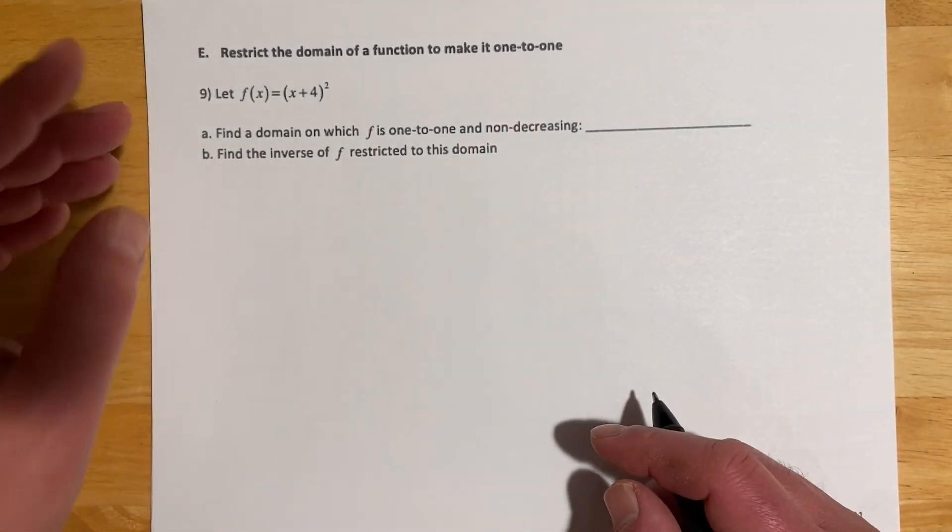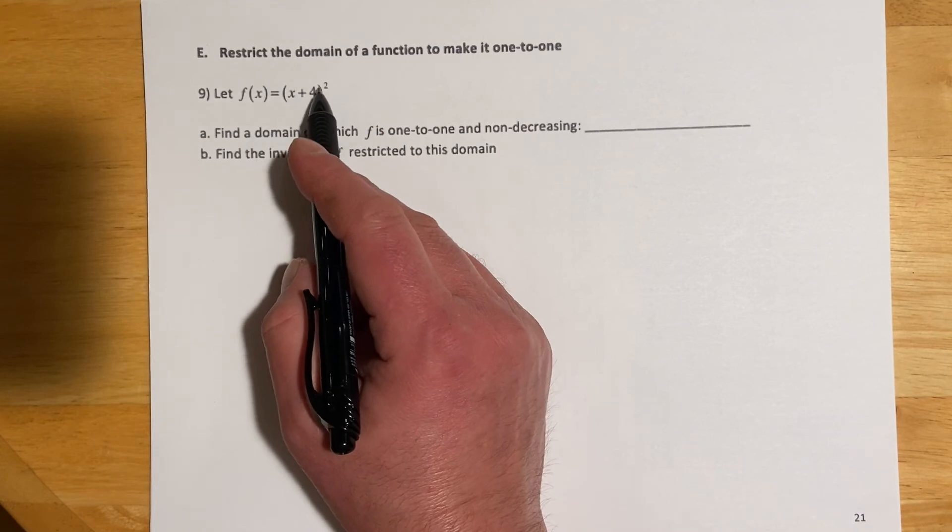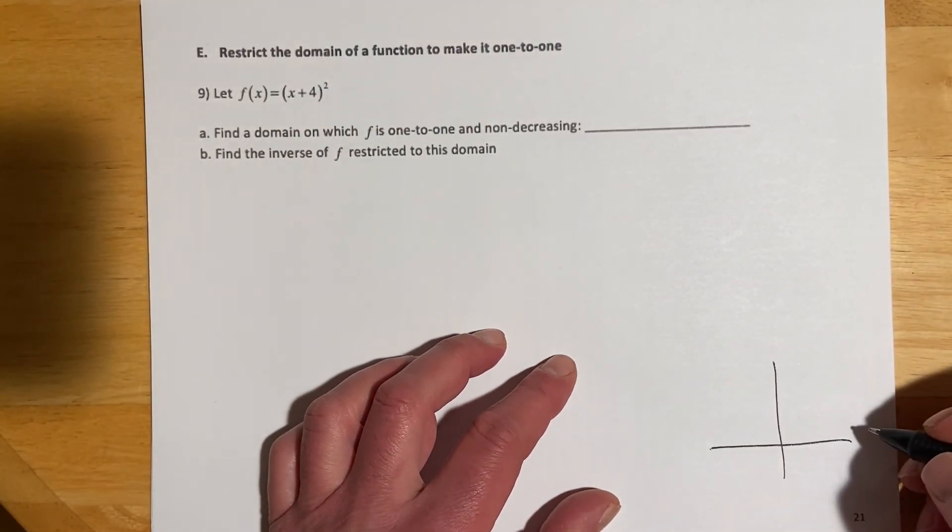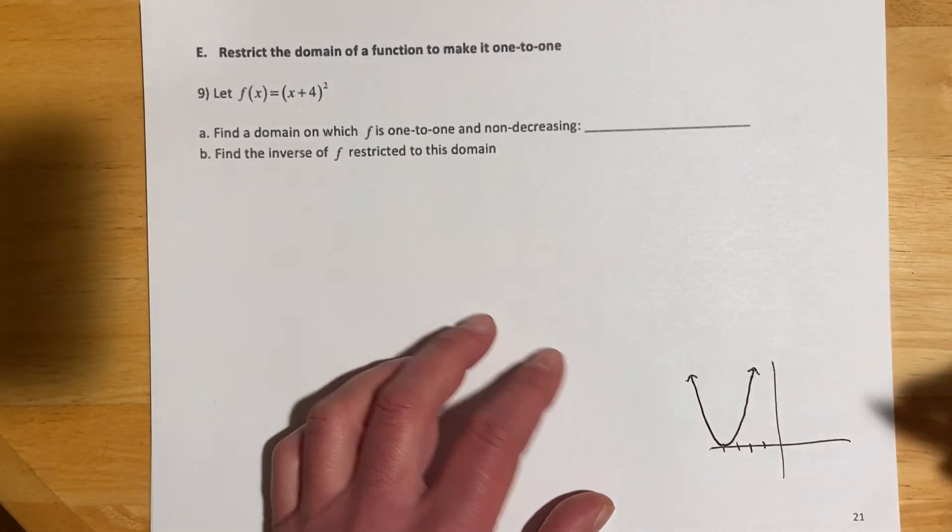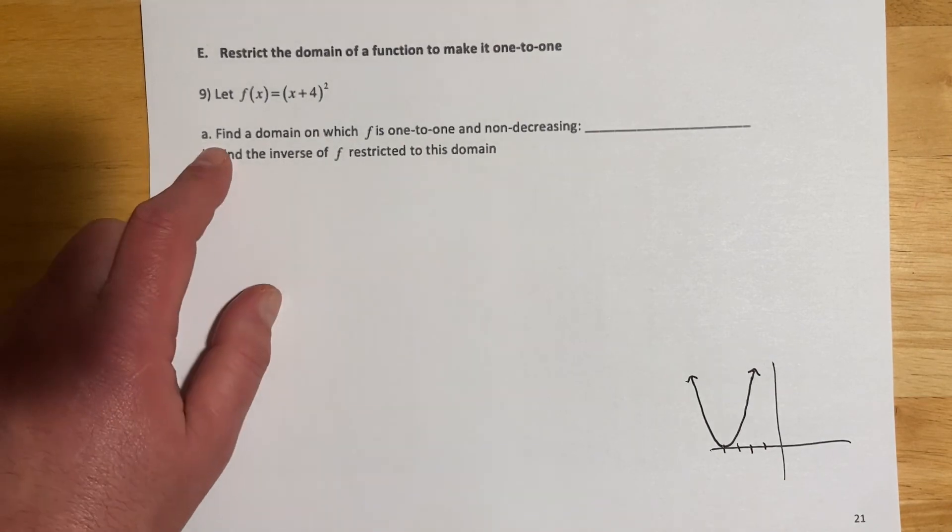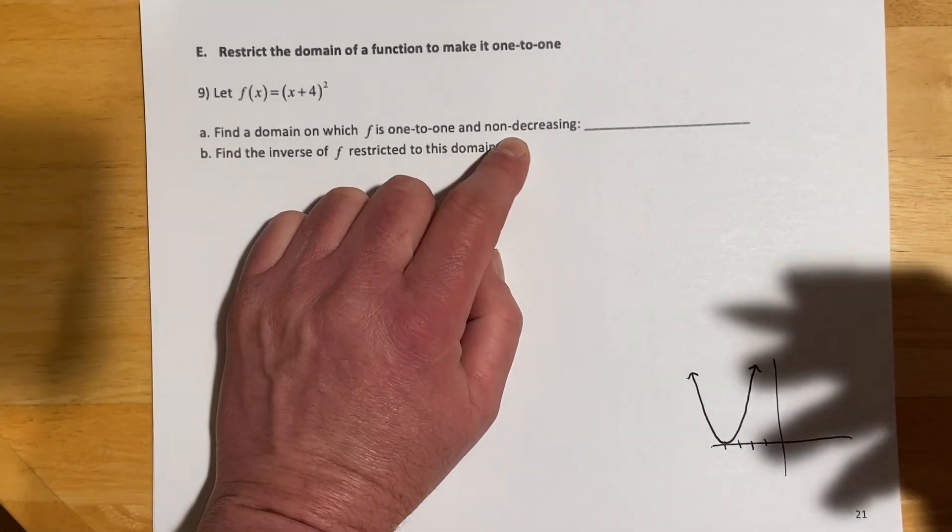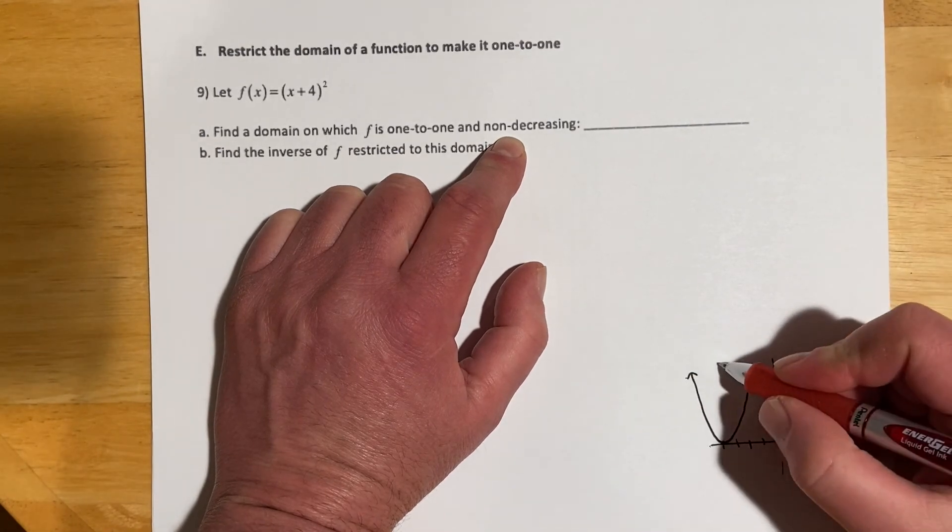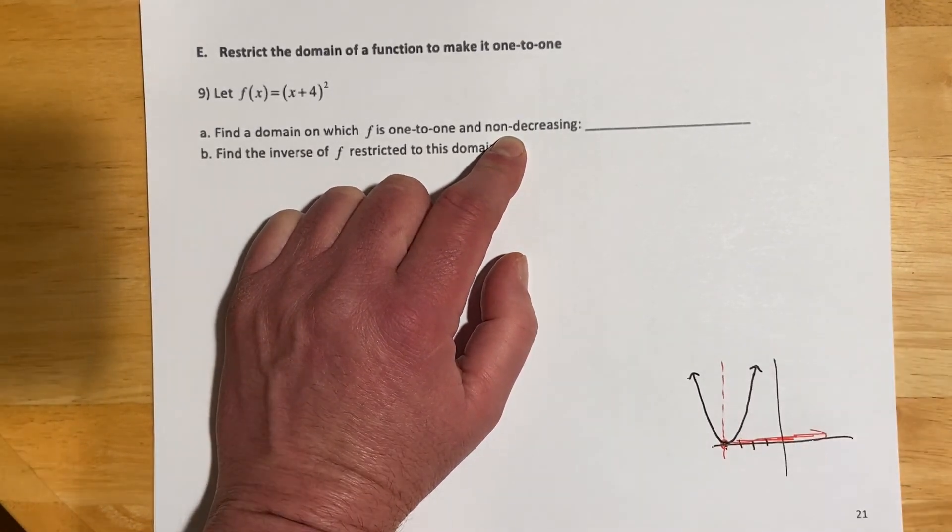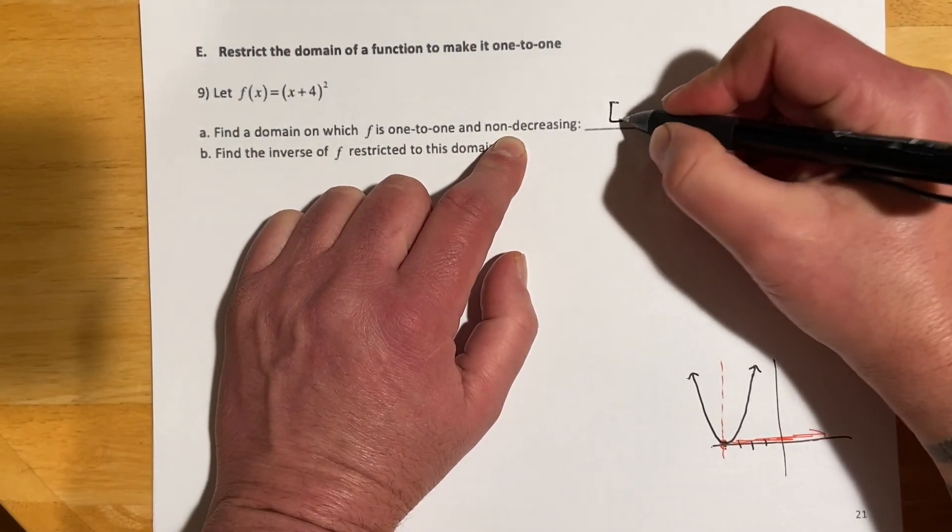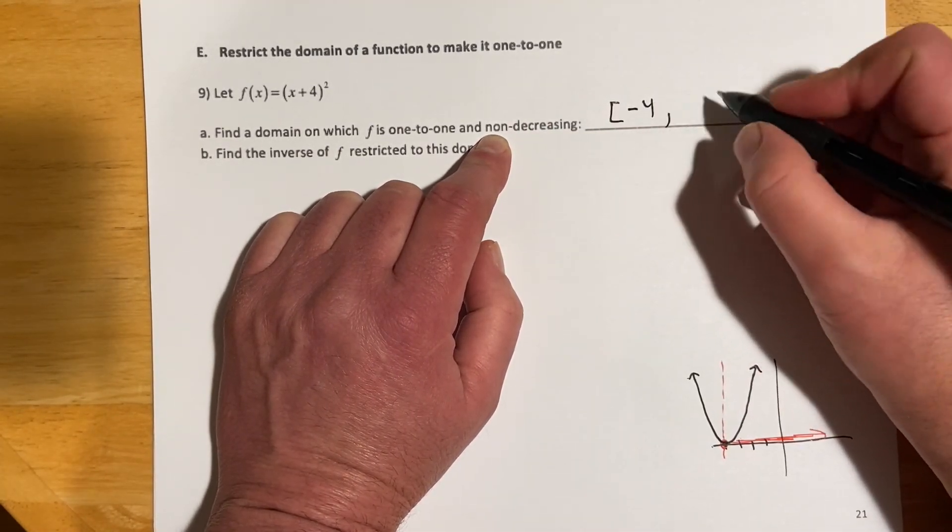These last couple, we're going to have to restrict the domain to make it 1 to 1, and then we can find the inverse on that domain. For number 9, we're given x plus 4 quantity squared. Just as a reminder, plus 4, so that would go left 4, and so we have something that looks kind of like that. Find a domain on which f is 1 to 1 and non-decreasing. In other words, it's 0 and increasing. If we look right there at the vertex, everything from here over is either 0 or getting bigger. So my domain on this would be from negative 4, and I'm including that because it's just saying non-decreasing. At that point it's technically 0, so I want to include it, negative 4 to infinity.